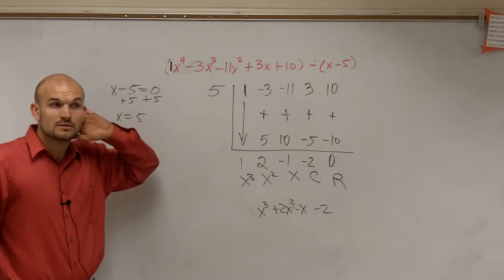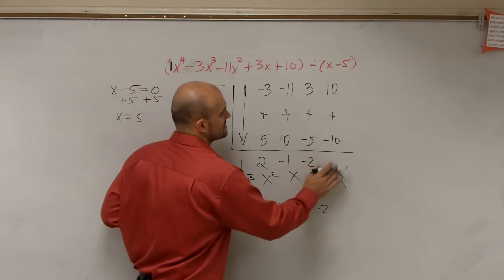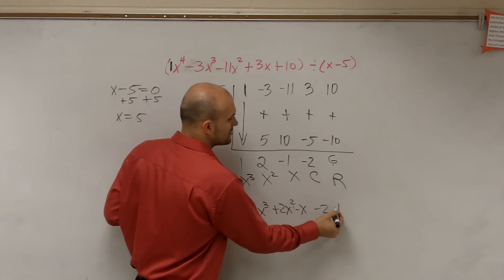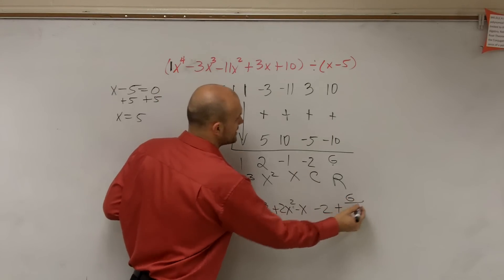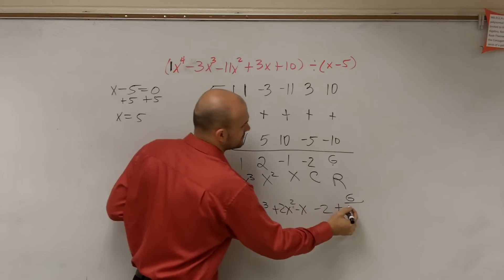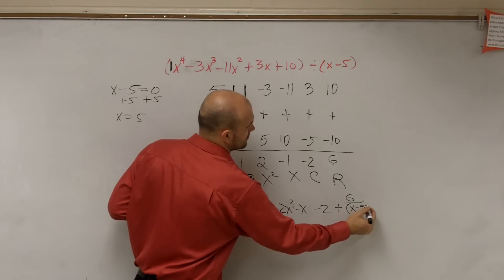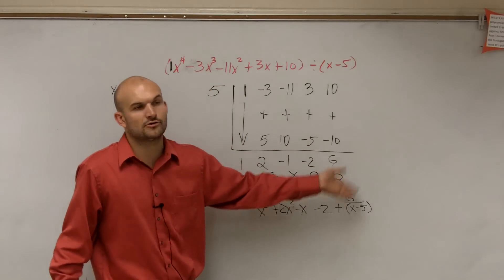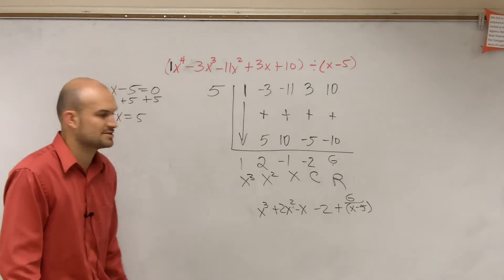If, let's say, my remainder was 6. If you do have a remainder, then all you simply do is take the remainder and divide it by your divisor. And if it's positive, then you'd add. If it was negative, you'd subtract. But yeah, you just take your remainder and take it over your divisor.